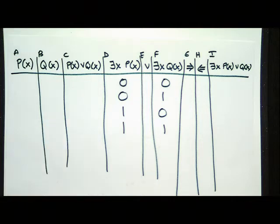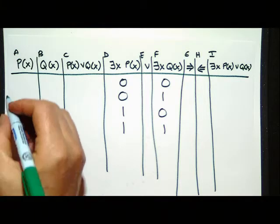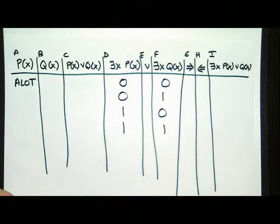The reason why we have these columns on the left is as shorthand to think about how often P and Q are true, based on the truth values of our predicates: 'there exists X, P of X' and 'there exists X, Q of X'. If I say 'there exists X, P of X', how many X's make P true? At least one. That's what ALOT stands for — not 'a lot', but 'at least one true'.